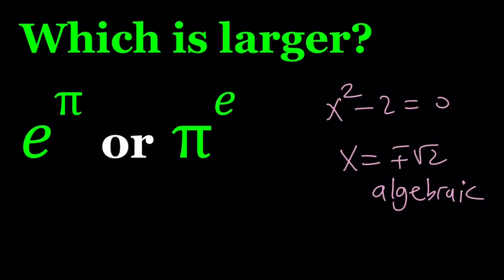So e and π are very special numbers. As you know, e is about 2.7 and π is about 3.14. We're exponentiating them together, and we want to find out which number is larger.